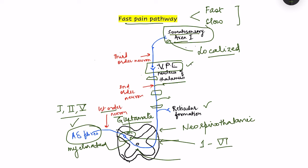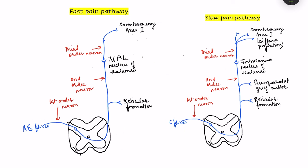Now for the slow pain pathway: the basic scheme is the same — there is a first order neuron which synapses in the dorsal horn of the spinal cord, then a second order neuron which crosses at the level of the spinal cord, ascends in the lateral spinothalamic tract, reaches the thalamus where it synapses, and the third order neuron arises from the thalamus and projects to the somatosensory area. However, there are very important key differences.